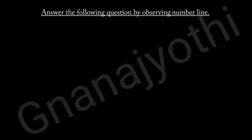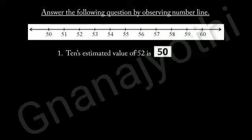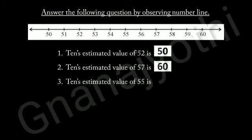Now, answer the following questions by observing the number line. Look at the first question: 10's estimated value of 52 is 50, because 52 is near to 50. Look at question 2: 10's estimated value of 57 is 60, because 57 is near to 60. Look at question 3: 10's estimated value of 55 is 60, because 55 is near to 60.